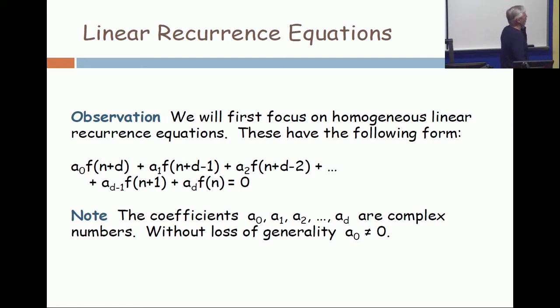So there's no f squared, there's no f of one value times f of another. There are no square roots, there are no sines and cosines. It's just linear functions and you multiply them by constants and you add them up. Now, because it's going from f(n) up to f(n+d), you might as well assume that the leading coefficient a_0 is nonzero.